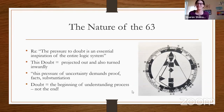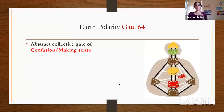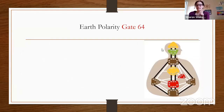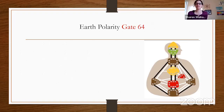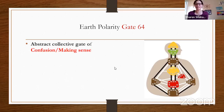Feel free to write comments or join us on the Facebook group 'Unlocked with Human Design.' The earth polarity of Gate 63 is Gate 64, and I have up here the entire collective circuit — both the logical side and the abstract side. We're going to talk about the 64 sitting across from the 63. Gate 64 is the abstract collective gate — it's about confusion and, on the bright side, making sense. When we often have 63 and 64 together, we have mental doubt and confusion.